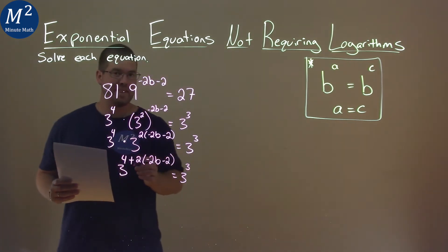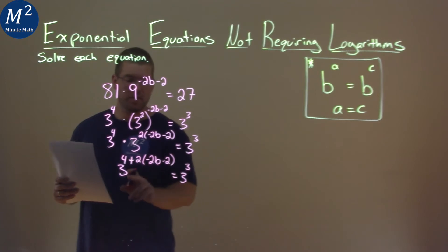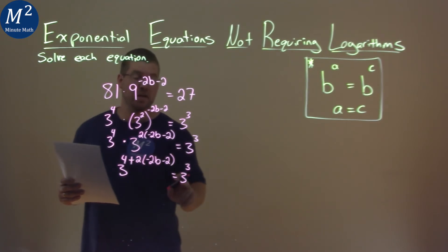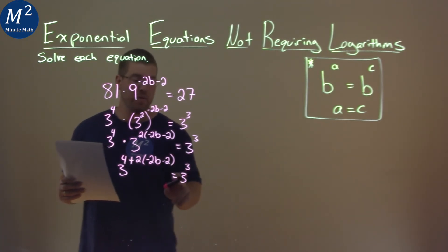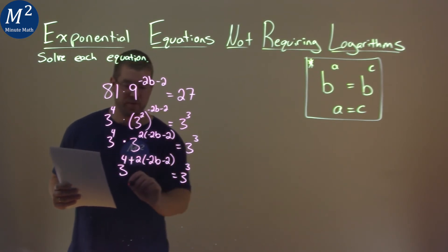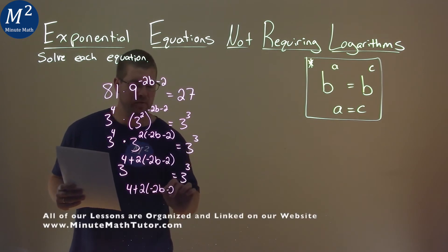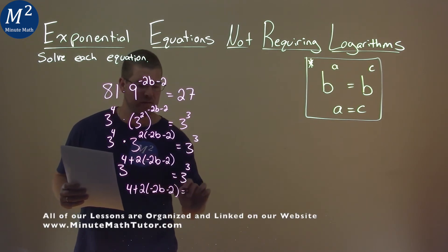From there, we have our bases of 3 on each side of the equal sign. So when that happens, we can just set the exponents equal to each other and solve. 4 plus 2 times negative 2b minus 2 is equal to that exponent of 3.